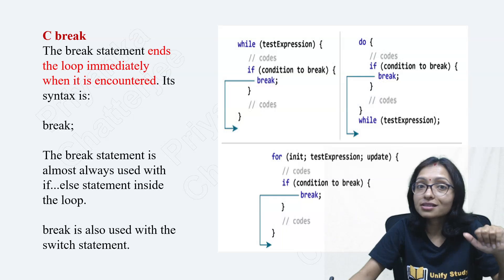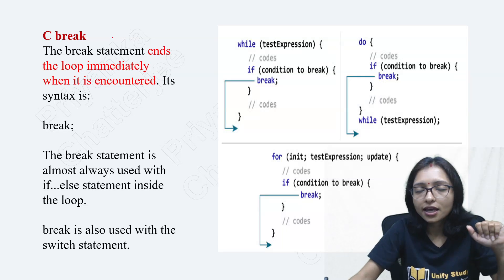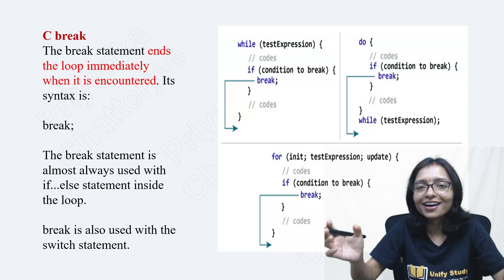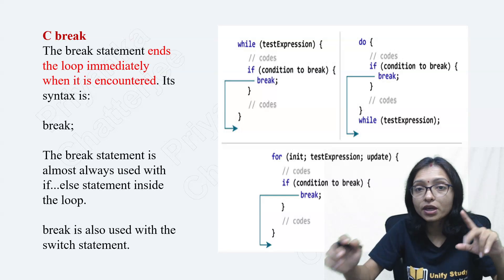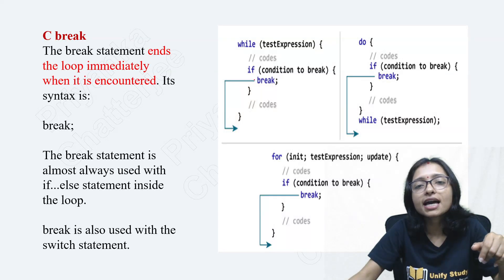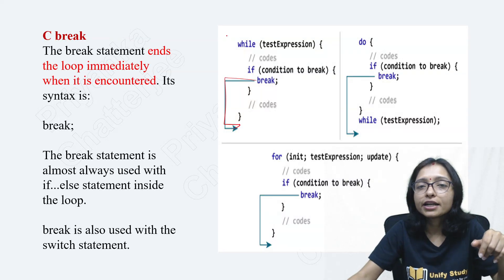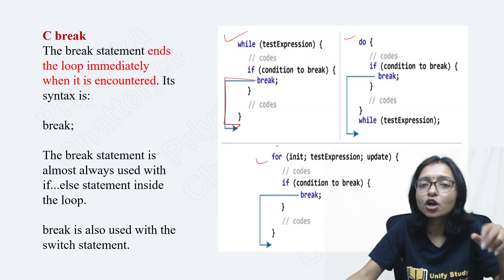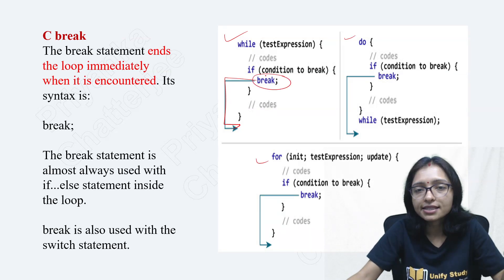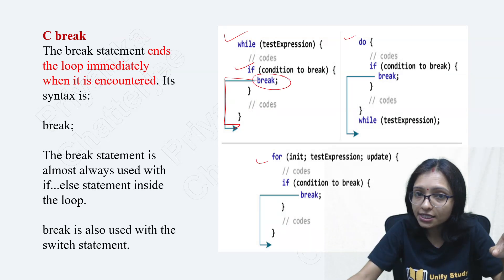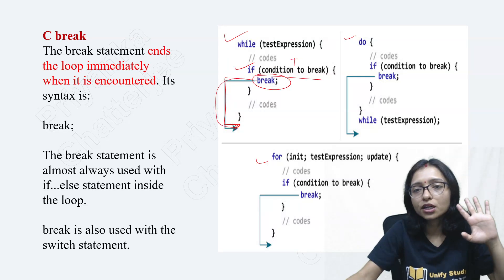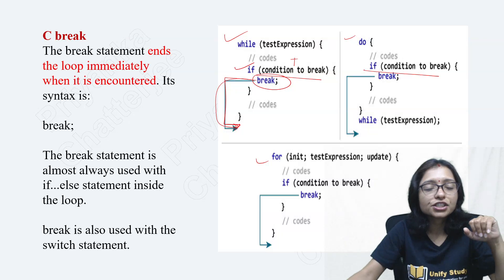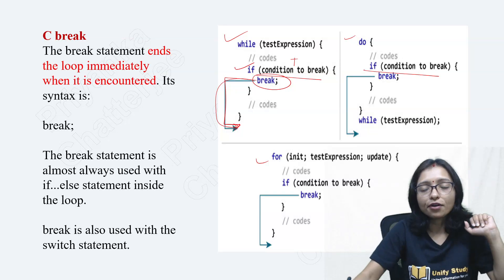First of all, break. What is the meaning of break? Wherever you use break — in a while loop, do-while loop, or for loop — if the condition is satisfied and true, it will come out from the loop. That is what break does: whenever the condition is true, it exits the loop.